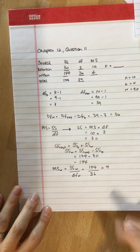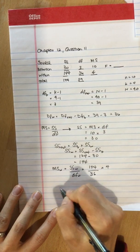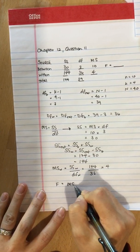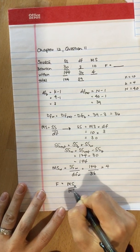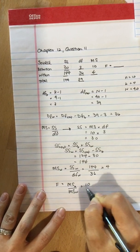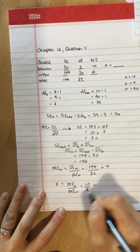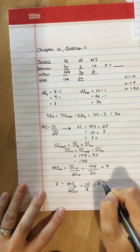And the last part is to calculate this F statistic. F is equal to the mean square between divided by mean square within. So 10 divided by 4, which is equal to 2.5.